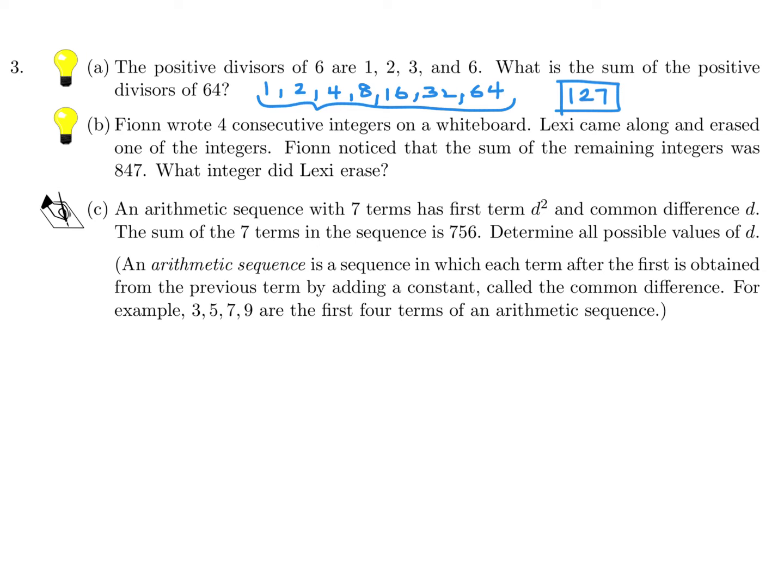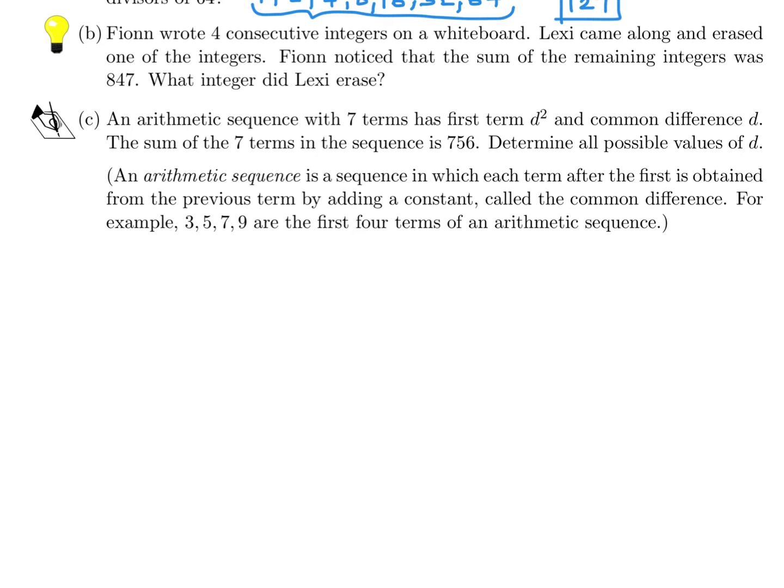Fion wrote four consecutive integers on a whiteboard. Lexi came along and erased one of the integers. Fion noticed that the sum of the remaining integers was 847. What integer did Lexi erase? We have a little bit of trial and error here because we have four consecutive integers: n, n+1, n+2, n+3. We don't know which one she erased. So at random say that this is the one she erased. That means the other ones are remaining on the board, and that sum is 847.